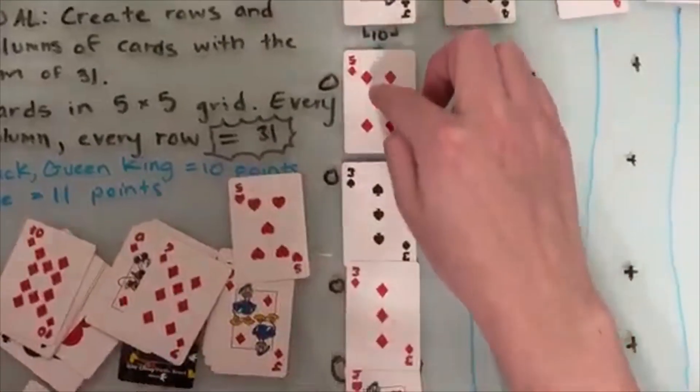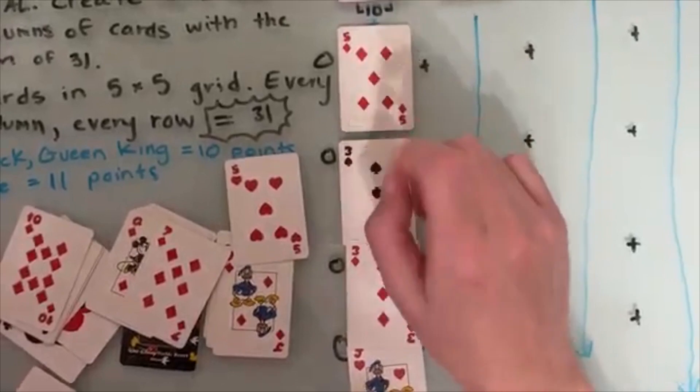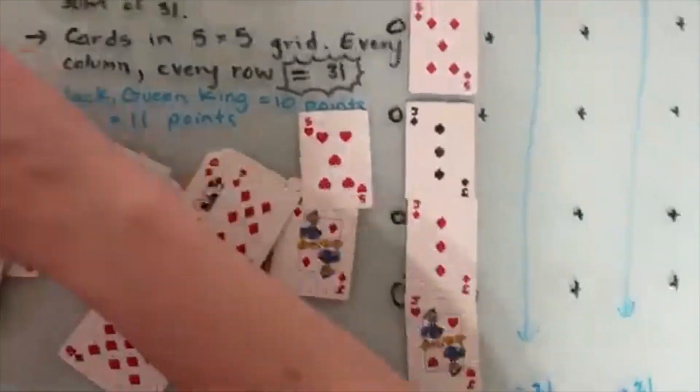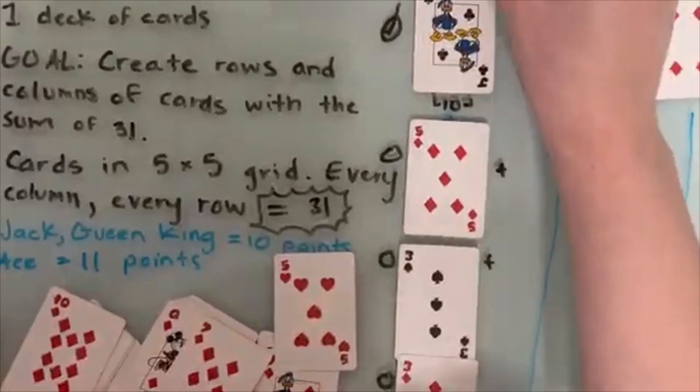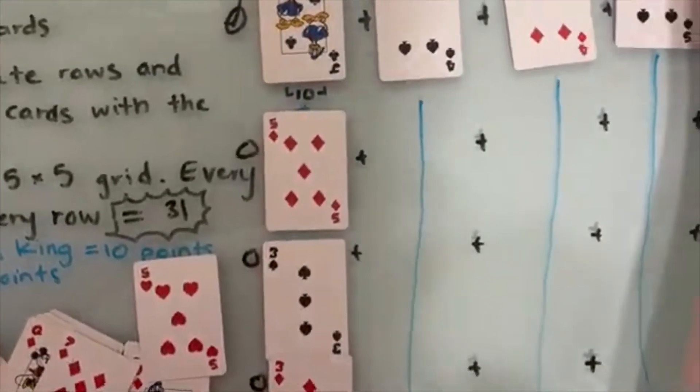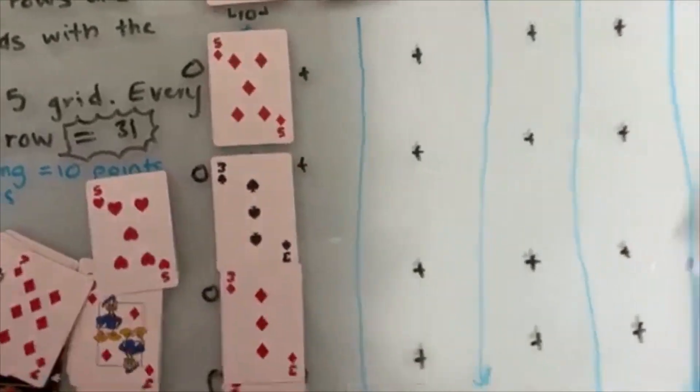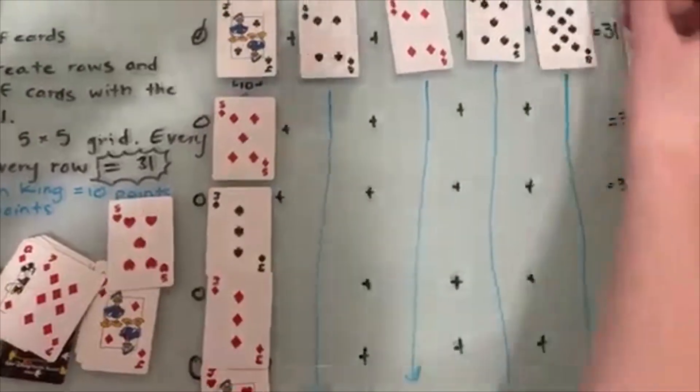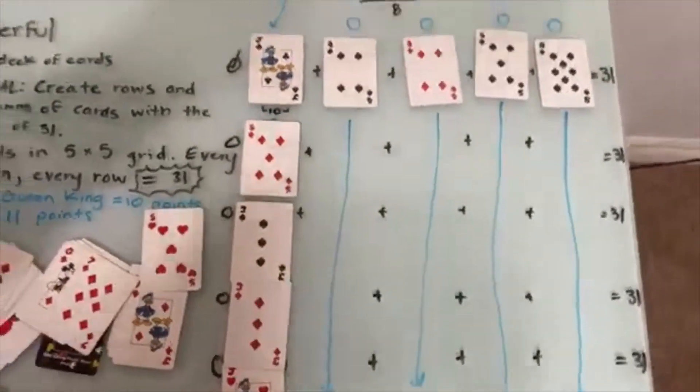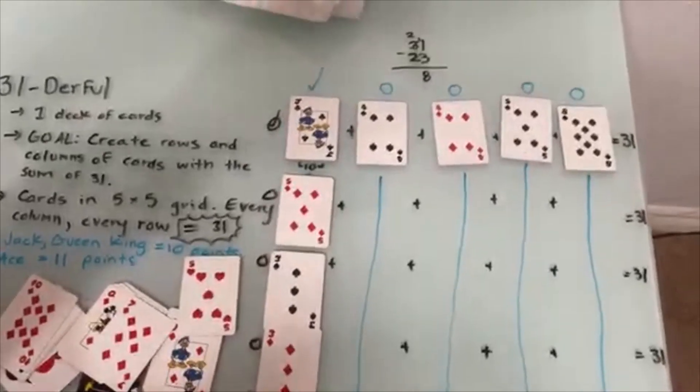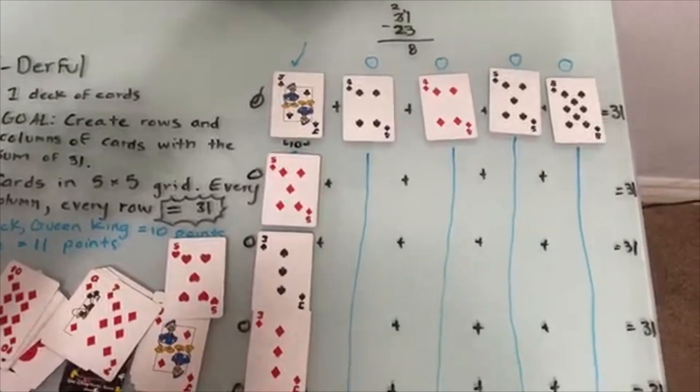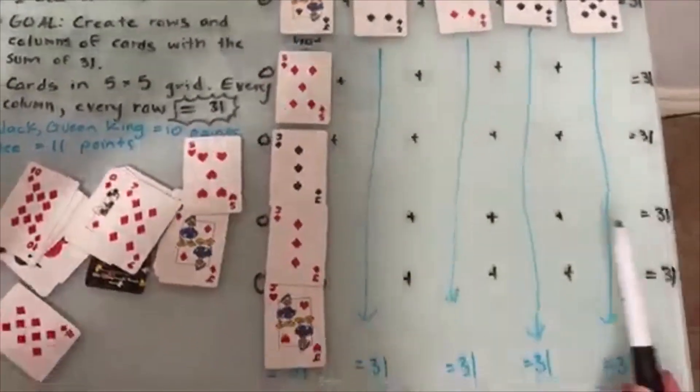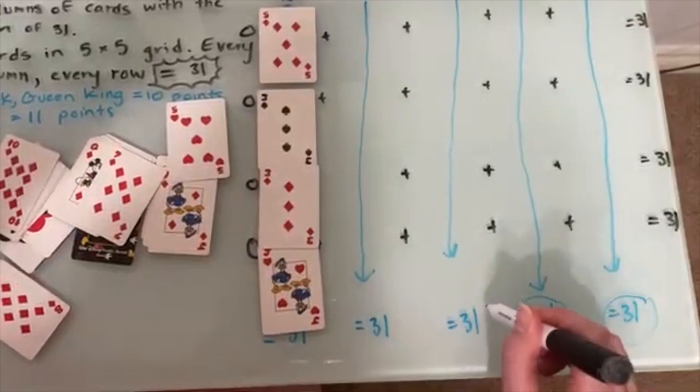I'm going to double check my math. 10, 20, 25, 26, 27, 28, 29, 30, 31. That is equal to 31. This is done. But I still need to go through all of these to make sure that when it goes down, my rows equal 31, my columns equal 31. So you're going to keep going until every row and every column is equal to 31.